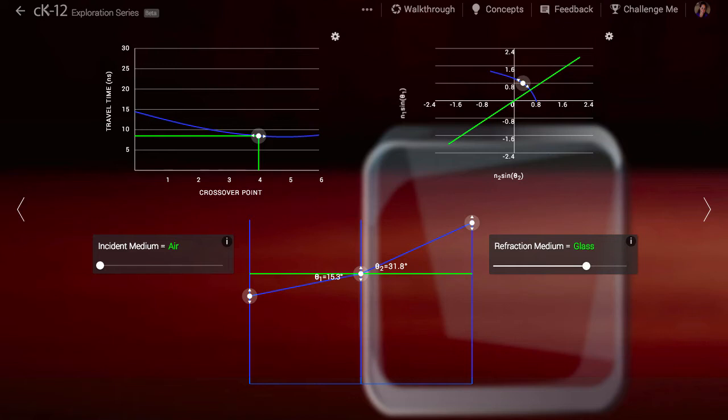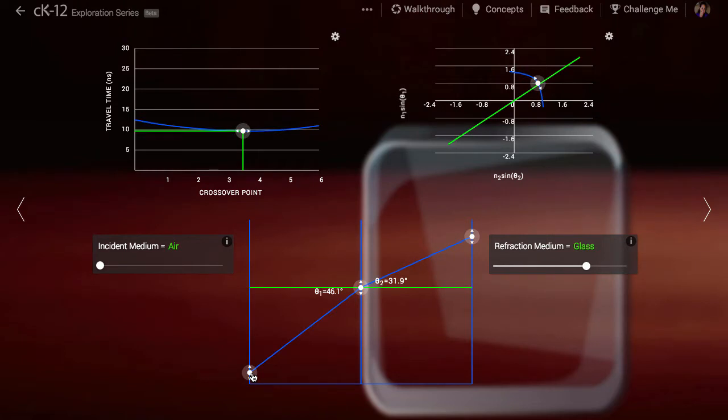Let's choose a point somewhere along the interface, it doesn't matter where. We can imagine that the light takes a certain amount of time to travel to that point from its starting position in air, and then a certain amount of time to travel from the interface to its ending point in glass.